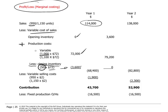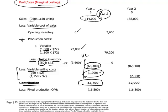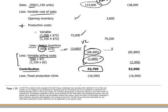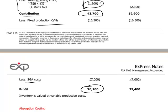This closing inventory of $3,600 is deducted from $72,000, so that our cost of sales is $68,400. The marginal costing method captures all variable costs first, including the variable selling costs. These are non-production costs but also enter into our calculation: 950 units sold at $2 is $1,900. Therefore, revenues less variable costs equals contribution of $43,700. From the contribution, we deduct fixed costs — both fixed production overheads and selling, general, and administrative costs — to arrive at a profit of $20,200.